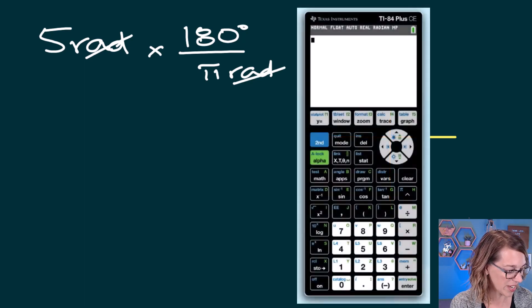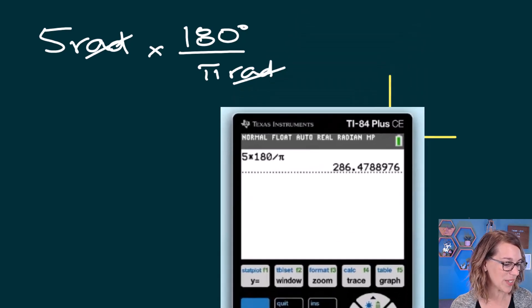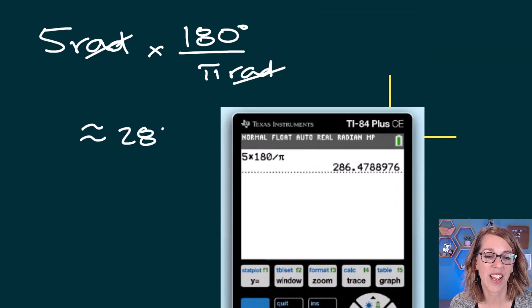Let's put that into our calculator. So I get five times 180 divided by π. And as a decimal, we get about 286. So about 286.5 degrees.